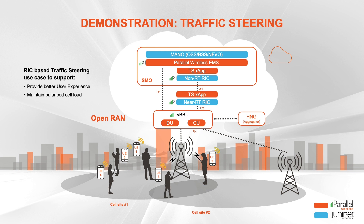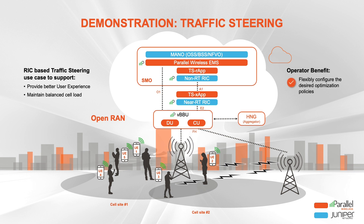The traffic steering RIC application addresses degradation by finding the right compromise on signal strength in comparison to feasible resource allocation on UEs. The goal is to redistribute UEs across multiple cells considering both cell and UE metrics for load, throughput, and volume. Traffic steering improves the lowest UE throughput by evaluating per-UE level metrics. Because adjacent cell two was lightly loaded, the traffic steering application automatically moved UE2 and UE3 to cell site two, improving performance across all UEs.